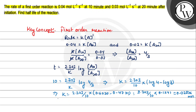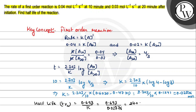Now for the half life of the reaction: t-half equals 0.693 divided by K. Substituting the value: 0.693 divided by 0.02876 gives approximately 24.09 minutes. This is the final answer. Hope you understood it well, best of luck.